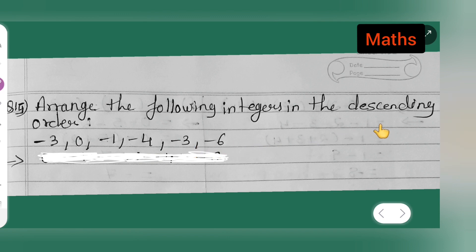Now, 0 is greater than -1, -1 is greater than -3, -3 is greater than -4.